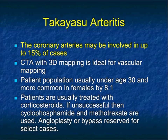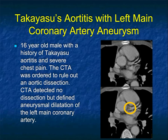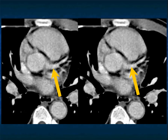With Takayasu's, up to 15% of cases can involve the coronary arteries. The disease typically occurs under age 40 — often under age 30 — predominantly in females by a seven-to-eight-to-one ratio, and patients are usually treated with corticosteroids; early intervention can change the course of disease. Here's a patient with chest pain showing an aneurysm of the left main coronary artery — no dissection — and you can see the thickening of the left main coronary artery due to the primary disease process.